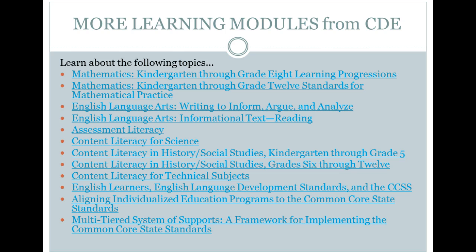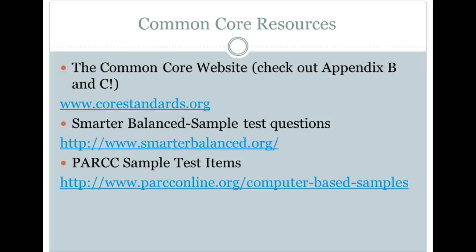For Common Core resources, if you want to go directly to the Common Core website, that's corestandards.org. I encourage you to look at Appendix B, which has those exemplar texts. Appendix C has student writing samples that show the expectations for student writing at each grade level in informational, persuasive opinion, and argumentative writing. I was looking at the third grade informational sample while helping second grade teachers plan their informational text writing unit — they're doing rainforest reports. Let me show you.